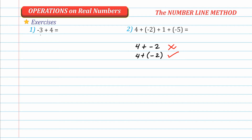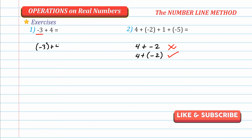You might ask: in exercise number 1, why does it start with negative 3 without parentheses? Take note, negative 3 is at the start of the operation — there's no number before it, so there's no confusion. It's obviously negative, not minus, because nothing precedes it. You can also rewrite it as negative 3 plus 4, which is also accepted. But writing it without the parentheses at the start is simpler.